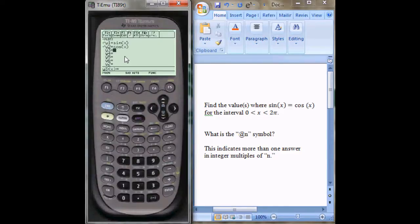I have them both entered here. y equals sine x, y equals cosine x, and graph. And you can see at two points, pi over 4 and 5 pi over 4, the two graphs intersect on the interval 0 to 2 pi.